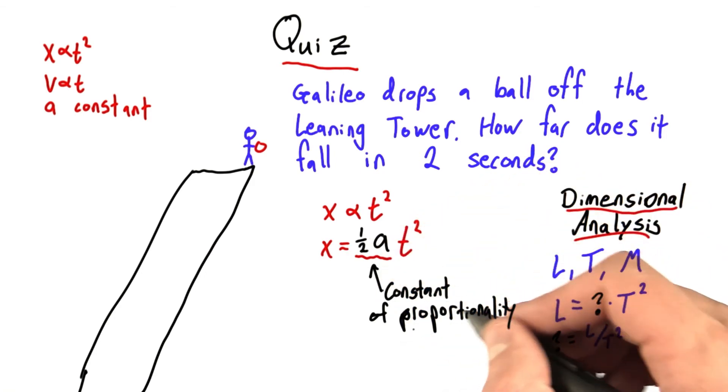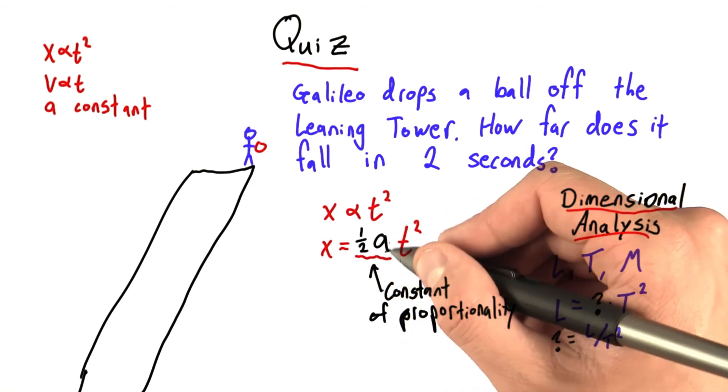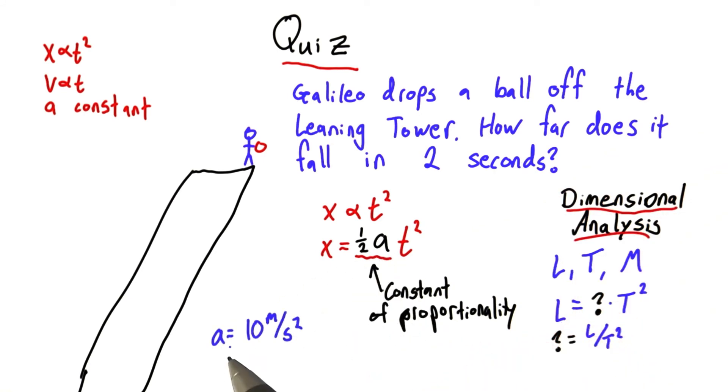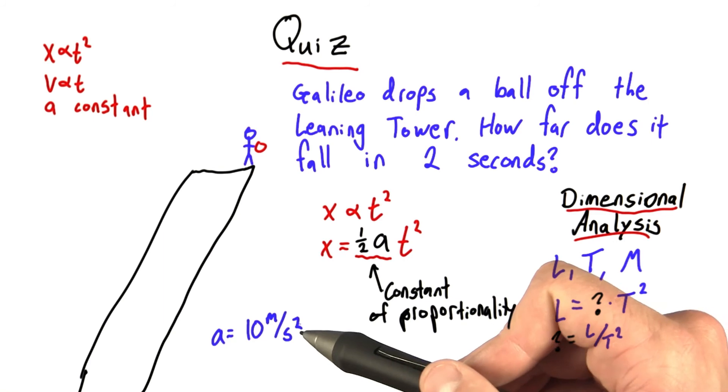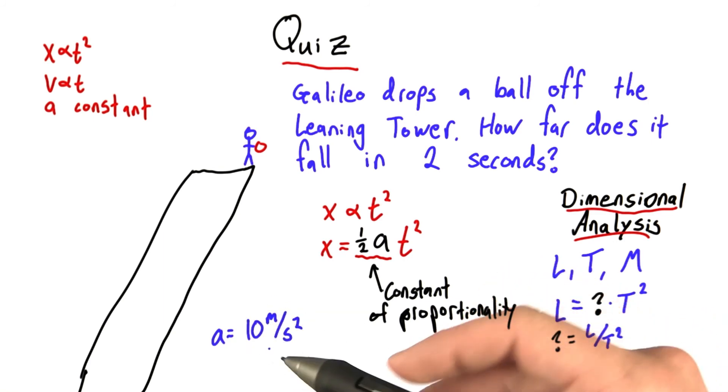Turns out that this constant of proportionality is just one half the acceleration of the object that we're talking about. For objects in free fall on earth, this acceleration happens to be equal to 10 meters per second squared. Which is why I've been using this as an example acceleration so much.